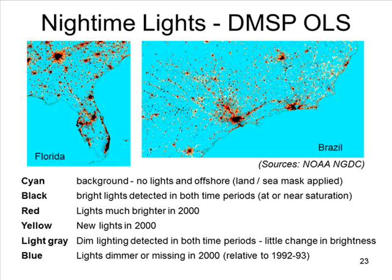We can also map things like lights at night. You might ask, why do you want to map lights? Well, lights pertain to energy usage, to population, and to commerce. There's a lot of information one can gain just by determining how the lights at night over the globe are changing. Are there areas in the third world where we can learn something about people's patterns just by observing the lights? The answer is very much yes.